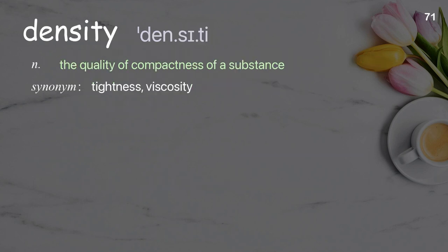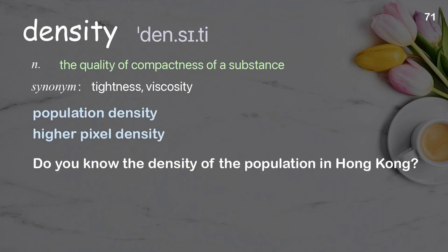Density: the quality of compactness of a substance. Examples: population density; higher pixel density; do you know the density of the population in Hong Kong?